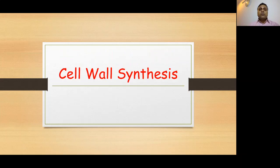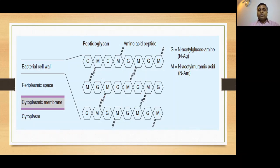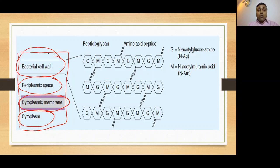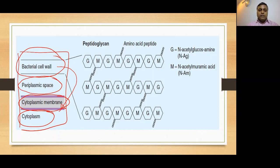First we'll be talking about the importance of cell wall and how it is synthesized. A bacterial cell is composed of four components: a cytoplasm surrounded by a cytoplasmic membrane, also called the cell membrane. In some bacteria we have a periplasmic space, and above all we have a bacterial cell wall. This cell wall protects the cell membrane from the harsh surrounding environment. Without the cell wall, the cytoplasmic membrane will be disrupted, and the bacterial cell will not survive. So the cell wall is very important for the integrity of a bacterium.